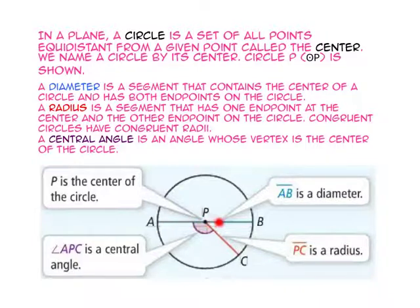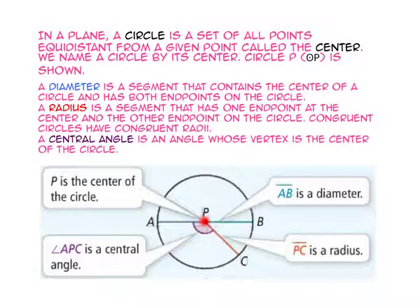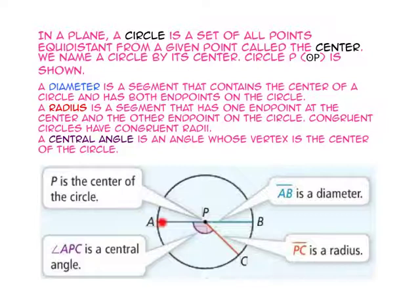A diameter is a segment that contains the center of a circle and has both endpoints on the circle. Segment AB is a diameter. A radius is a segment that has one endpoint at the center and the other endpoint on the circle. Segment PC is a radius. Congruent circles have congruent radii. A central angle is an angle whose vertex is the center of the circle. Angle APC is a central angle.